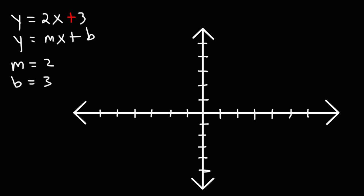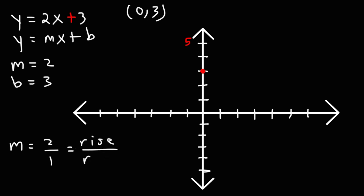A quick and simple way to graph a linear equation in this format is to plot the y-intercept first, which is that 3 along the y-axis. Going up 1, 2, 3 — that's the point 0, 3. Now we can use the slope to get the next point. The slope is 2, and the slope equals the rise over the run. 2 is the same as 2 over 1. So we're going to rise 2 units from the y-intercept and run 1 unit to the right. This gives us our next point.